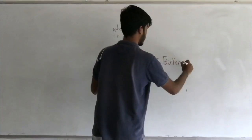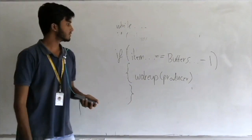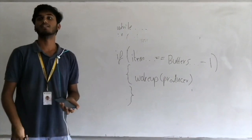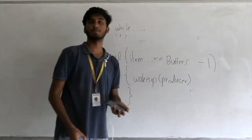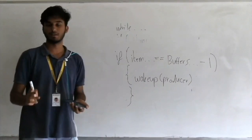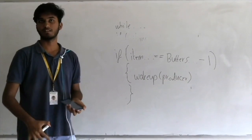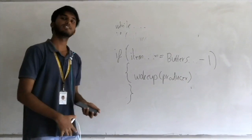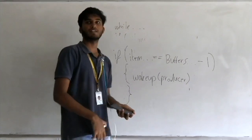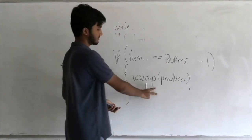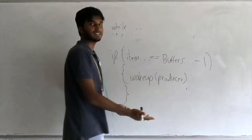After consuming, if item count equals buffer size minus one, it means the number of items in the buffer has decreased by one. When that happens, the consumer is supposed to tell the producer to wake up and produce an item — that's what this wake-up-producer block says.